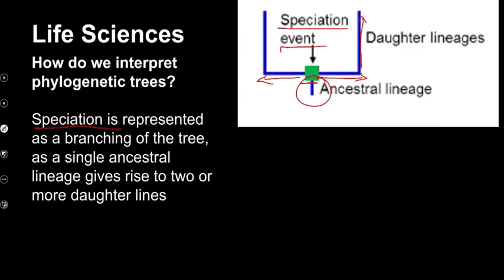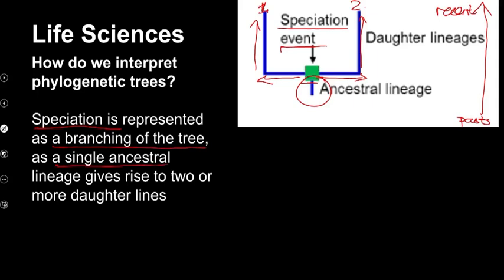We now have two new lines, and over time — moving from the bottom to the top means going from the past towards more recent times — we find that possibly as we get to recent times we would have two different species: this would be one and this would be two. We can see that they have changed. Speciation is represented as branching of the tree. A single ancestral population or lineage gives rise to two or sometimes more daughter lines, depending on the speciation event that took place.